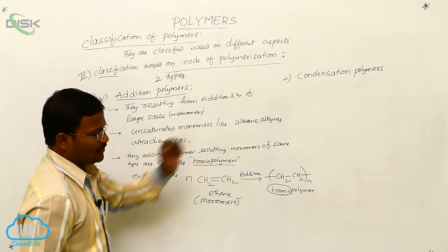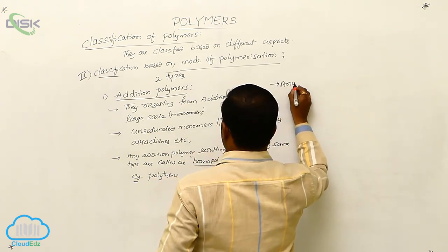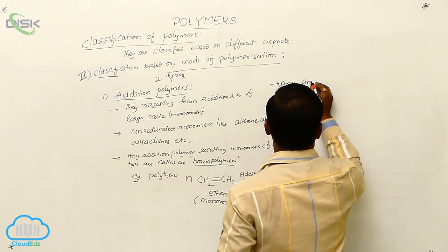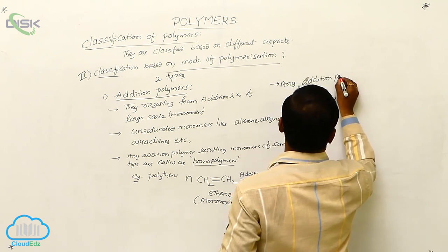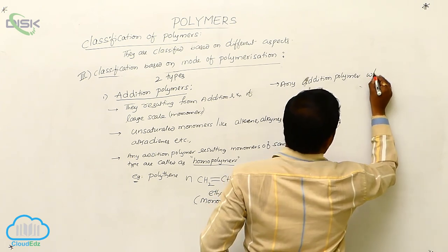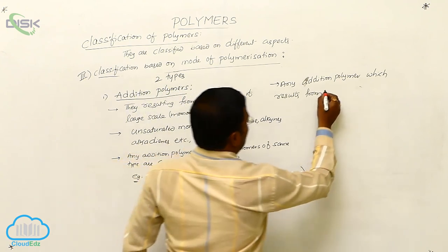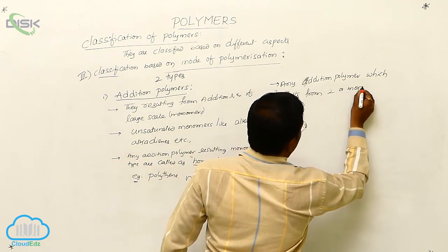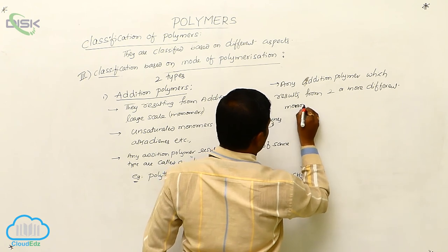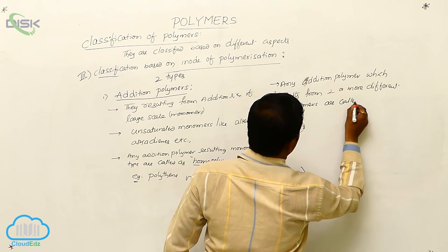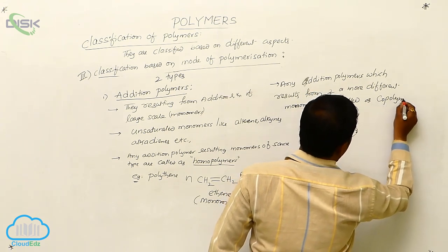There is one more type of addition polymer. If any addition polymer results from two or more different monomers, it is called a co-polymer.